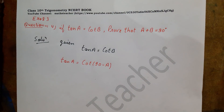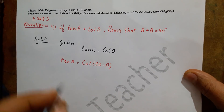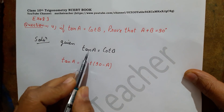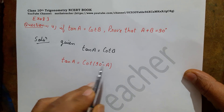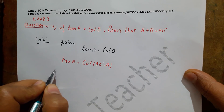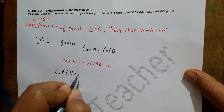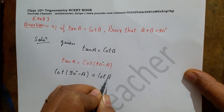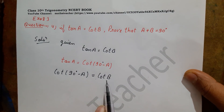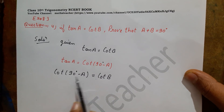Here we change only tan, so we write: cot(90° minus A) equals cot B. Now the left-hand side and right-hand side both have cot, and they are equal to each other.